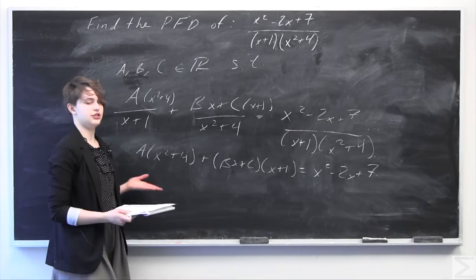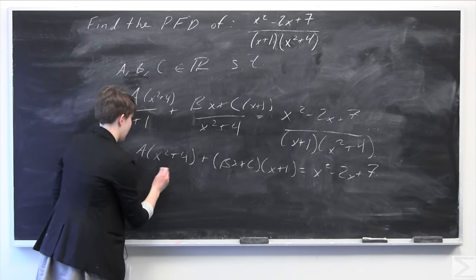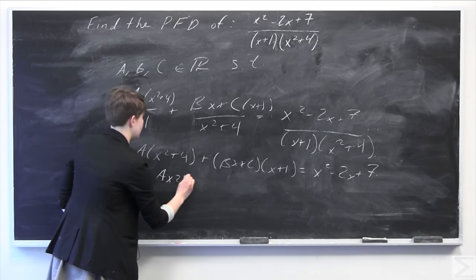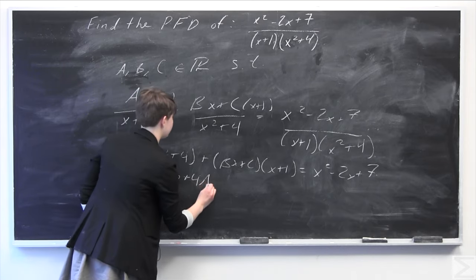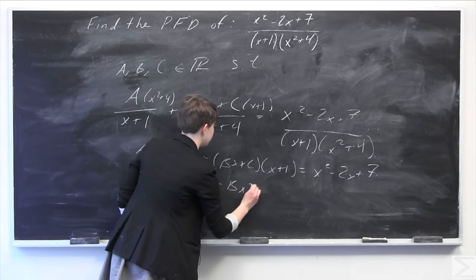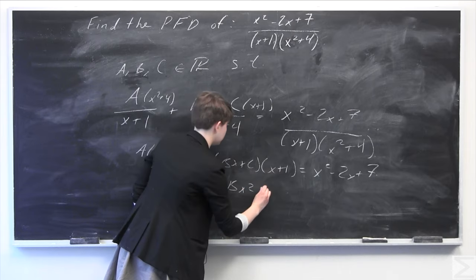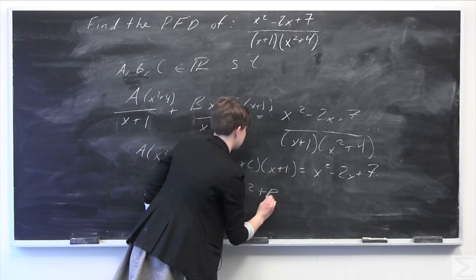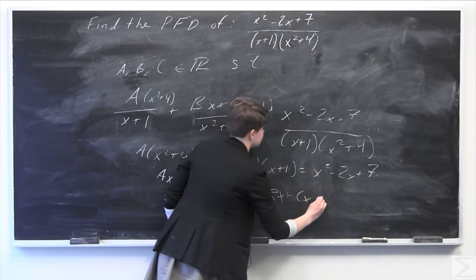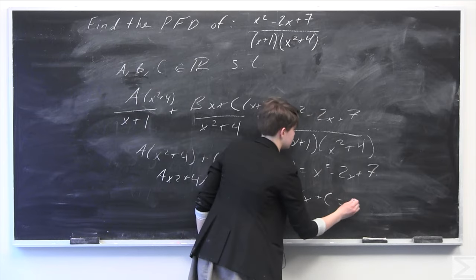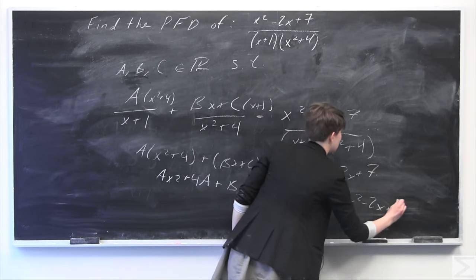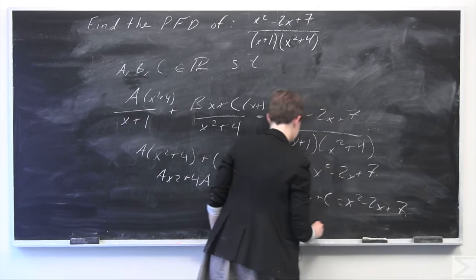Distributing out: a times x squared is ax squared, plus 4a, plus bx times x is bx squared, plus bx times 1 is bx, plus c times x is cx, plus c times 1 is c. This is all equal to x squared minus 2x plus 7.